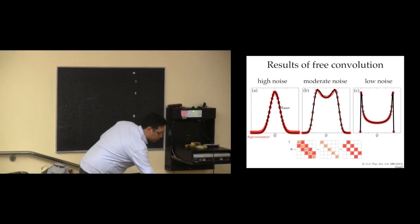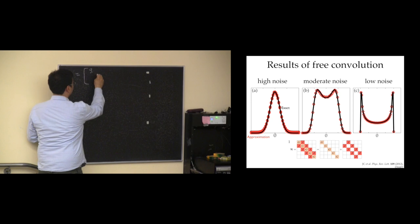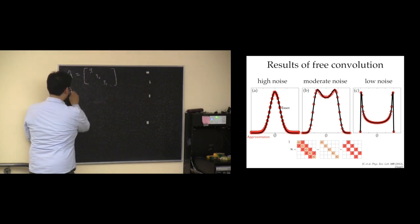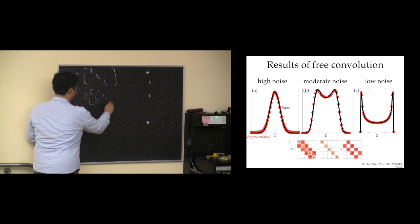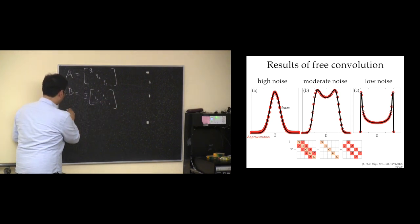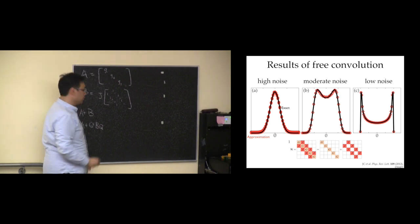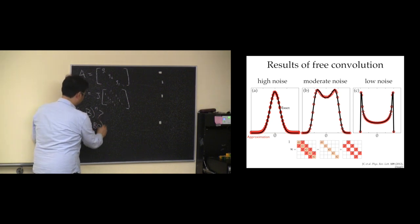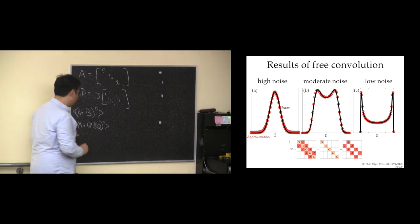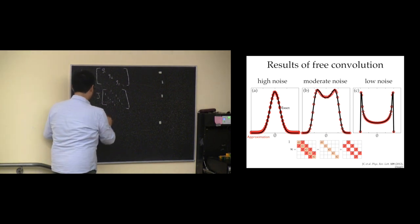In this particular problem, A is a diagonal matrix with entries G₁, G₂, G₃, and so on, and B is essentially some constant times the tridiagonal matrix. So I have A plus B and A plus Q^T B Q. I can ask what is the moment of this thing — the expectation trace. As was asked earlier, this trace is now also an expectation over random realizations of A and B and also random realizations of Q.